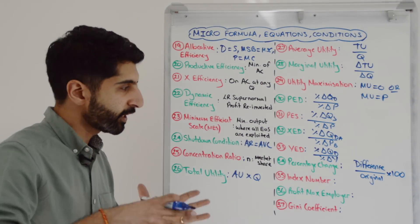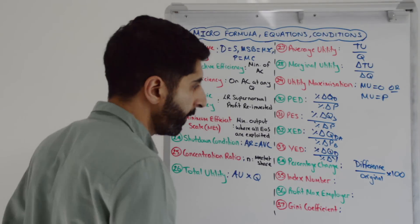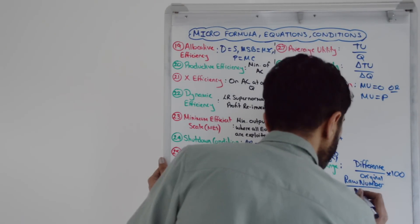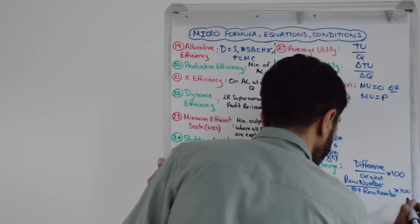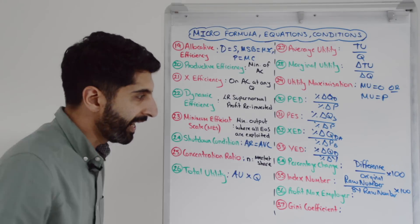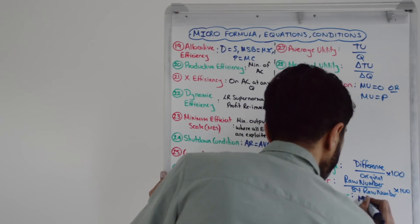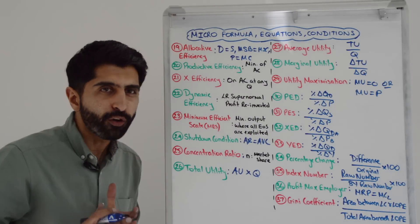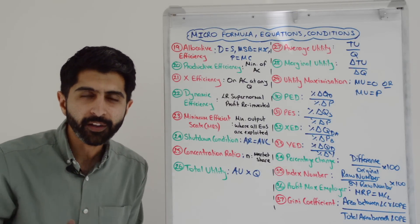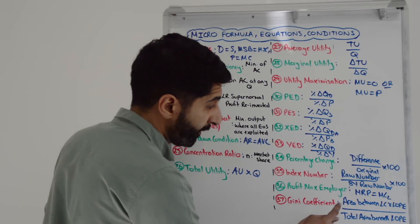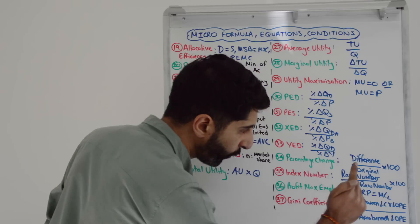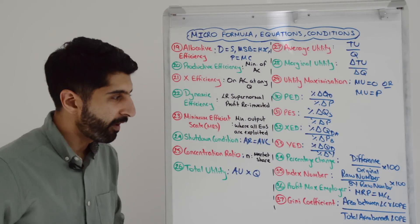To work out an index number — to convert a raw number to an index number — you take the raw number that you want to convert and divide by the raw number in the base period, then multiply by 100. A profit-maximizing employer in a labor market will employ workers up until where MRP is equal to the marginal cost of labor. And lastly, the Gini coefficient — much better to learn this with words as opposed to using letters. It's just the area between the Lorenz curve and line of perfect equality divided by the total area beneath the line of perfect equality.